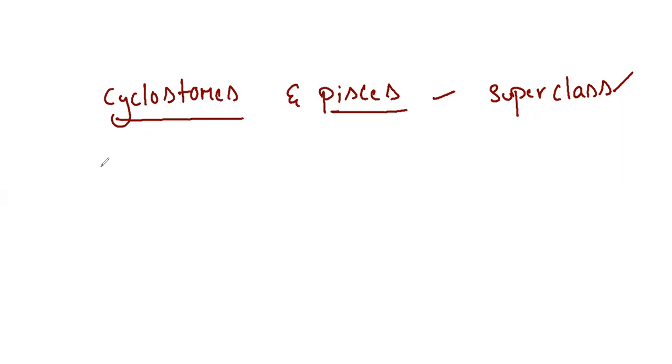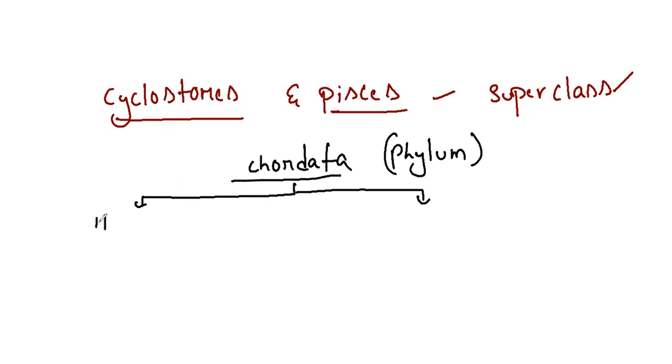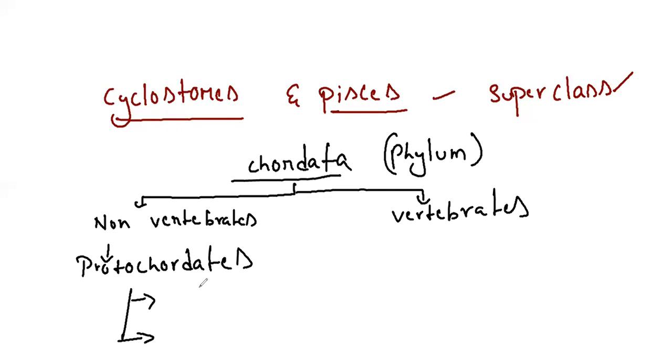The animals, every story starts with Chordata. Chordata is a phylum. Chordata is being divided into two things: non-vertebrates and vertebrates. Non-vertebrates are also called protocordates, and protocordates consists of two things - urocordates and cephalocordates - and then vertebrates.